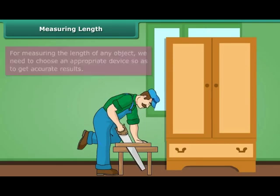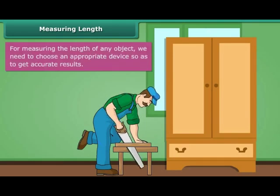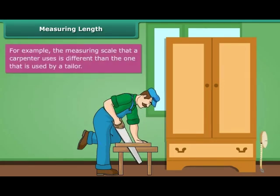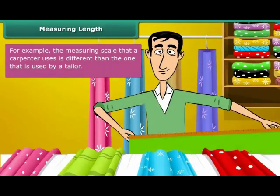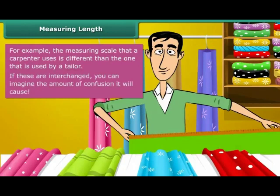Measuring Length. For measuring the length of any object, we need to choose an appropriate device so as to get accurate results. For example, the measuring scale that a carpenter uses is different than the one that is used by a tailor. If these are interchanged, you can imagine the amount of confusion it will cause.